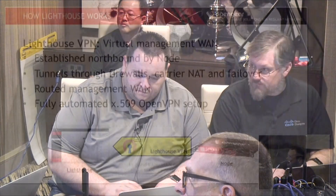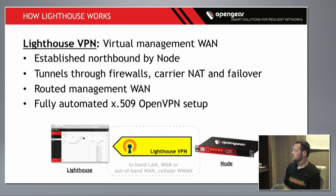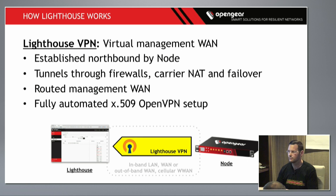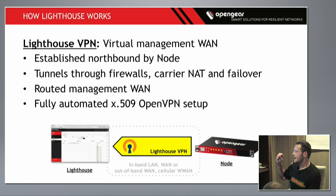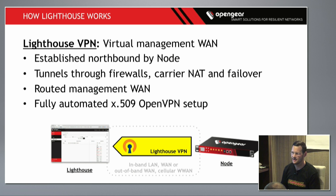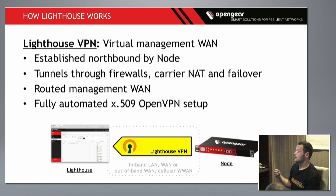This is how the Lighthouse VPN works — it's a northbound connection. What's great about this is it works really well with the inbuilt cellular. When your remote site fails, or you're turning up a new remote site for the first time and you don't have a primary WAN connection, you can use the cellular connection. The OpenGear node will literally just retunnel over cellular, the gateway will switch, and when your primary network comes back up, it'll route back to Lighthouse via the least cost path.